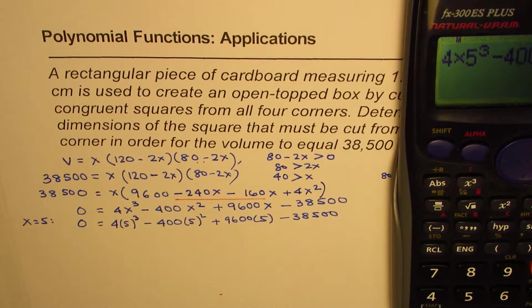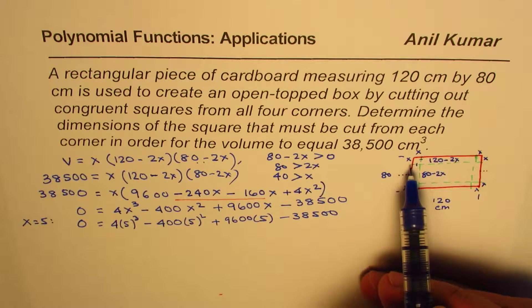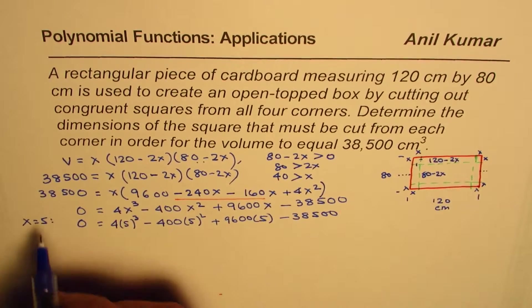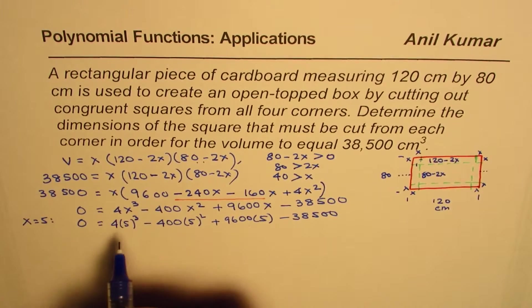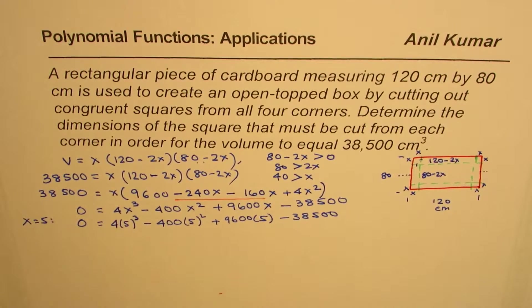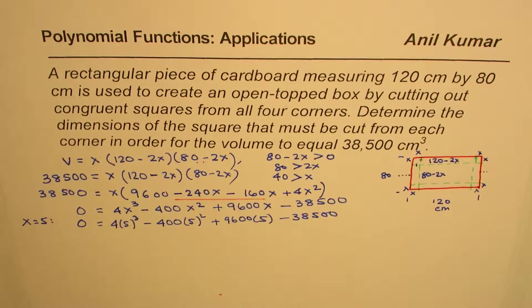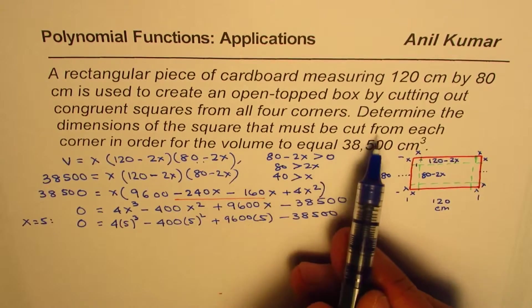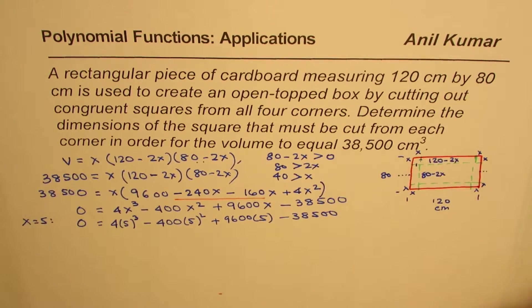And that clearly indicates that 5 is one of the factors. So that means one of the solution here is that X could be 5. So now we can actually find the other solutions also. So X equals to 5 gives us the 0, and therefore we know X minus 5 is a factor. Now once you know X minus 5 is a factor, you can actually perform long division and find other factors. That's the whole idea. Now the question says, determine the dimensions of the square that must be cut from each corner in order for the volume to equal that much. So we have at least one solution.